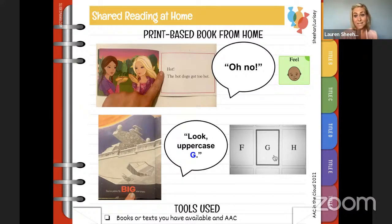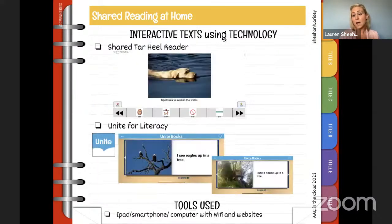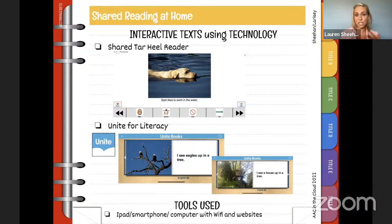Our AAC use and shared reading really go hand in hand — it's almost the perfect pair. It provides language support and aided language for our learners while also working on literacy and engagement in reading. Tar Heel Reader is a fantastic, free resource with two versions — Shared Tar Heel Reader is specific to shared reading. Here's an example of a free book about a dog, because a learner has a dog at home and loves talking about it. That's a wonderful, high-interest choice.